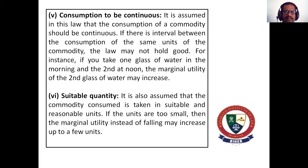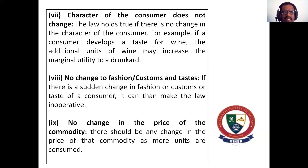Number six assumption: Suitable quantity — the commodity consumed should be taken in suitable and reasonable units. If the units are too small, the marginal utility instead of falling may increase up to a few units. Also, the character of the consumer should not change — for example, if a consumer develops a taste for wine, the additional unit of wine may increase the marginal utility to a drunkard. The theory is purely based on the rational behavior of human beings.